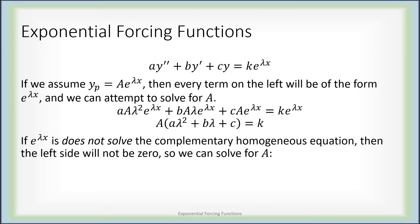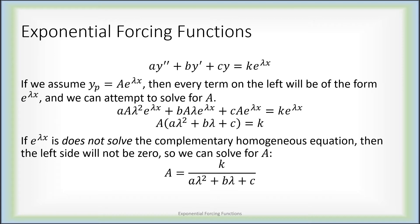If e to the lambda x does not solve the complementary homogeneous equation, then this quadratic in lambda will not be zero. Setting this equal to zero and solving for lambda is how we found which e to the lambda x will solve Ay'' + By' + Cy = 0. So assuming that lambda does not set A lambda squared plus B lambda plus C equal to zero — in other words, e to the lambda x does not solve the complementary homogeneous equation — then all we have to do to solve for A is divide by that polynomial.